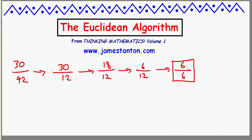When you have two common values, that common value is indeed the greatest common factor of the original two numbers. 30 is a multiple of 6, 42 is a multiple of 6, and in fact 6 is the greatest common factor of 30 and 42.